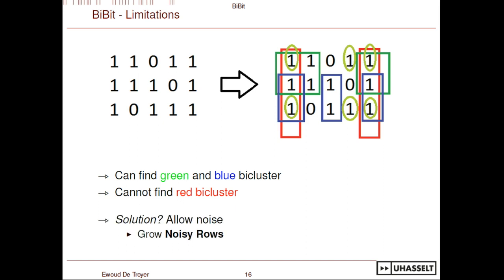A possible solution is to allow noise in your bi-clusters — not just looking for bi-clusters with only ones, but also allowing zeros. In a collaboration project with other researchers, they were interested in exactly this. They didn't only want perfect bi-clusters; for example, they had symptoms and patients fitting a group of symptoms, but wanted to allow a little leeway, a little noise, to see which patients fit the general trend of a pattern.